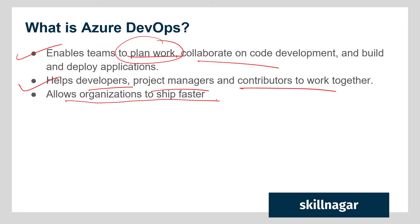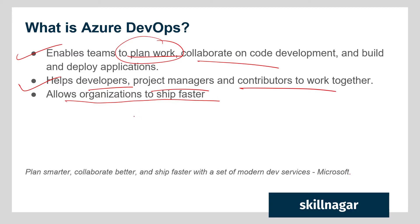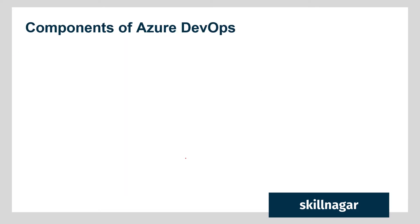It helps organizations ship faster, because when there are so many stakeholders involved, we can get more people working on the project together so that it can be shipped faster — which is actually a bottleneck in various organizations. From the official documentation, Microsoft says: 'Plan smarter, collaborate better, and ship faster with a set of modern dev tools.' Shipping faster is one of the most important points, because customers are waiting for the features that have been promised.